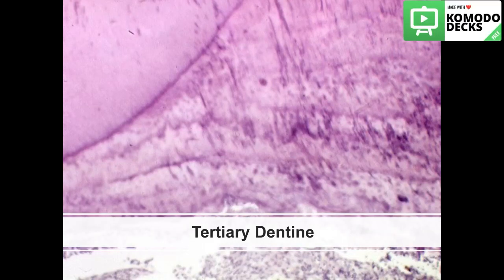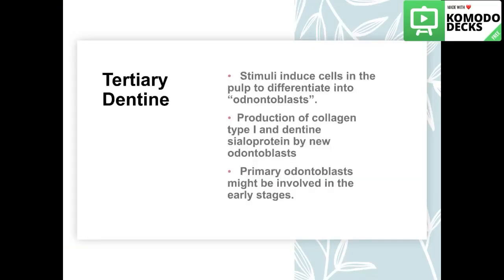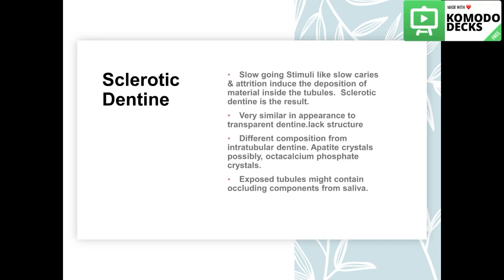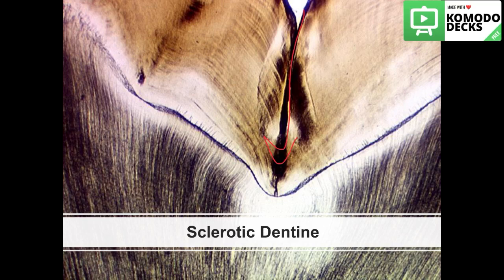Tertiary dentine is not as structured or well-mineralized as primary and secondary dentine. At the primary stages of the stimuli — when caries is in its early stages — the primary odontoblasts already present may be involved in secretion of tertiary dentine. When the stimulus continues, it induces stem cells in the pulp to differentiate into odontoblasts, which produce collagen type 1 and dentine sialoprotein into the tertiary dentine. If the stimulus is slow-growing, like slow fissure caries or attrition, it induces deposition of material inside the tubules, occluding them, causing sclerotic dentine.